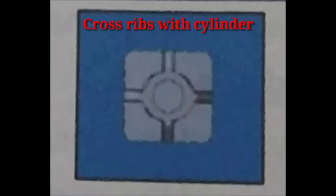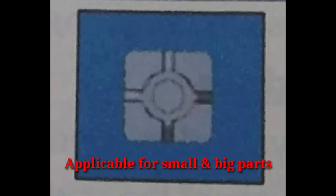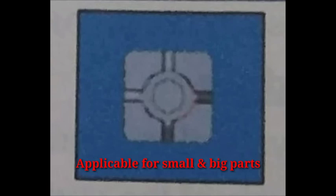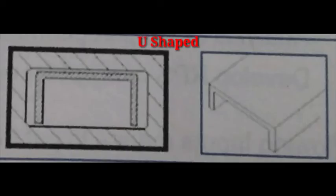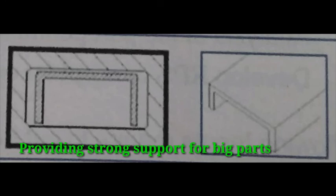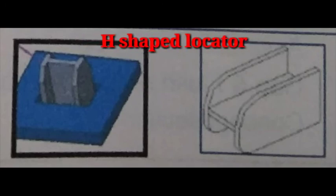Next is the U shape locator. U shape locator is recommended for strong support for big parts. Next type of locator is the H shape locator, which is strongly recommended for providing strong support for big parts.